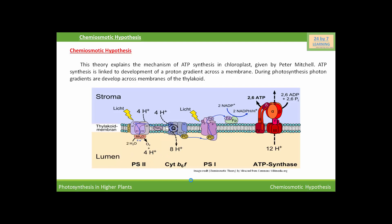Four hydrogen atoms are added into the lumen of the thylakoid by the splitting of two water molecules. Twelve hydrogen ions move from the stroma of the chloroplast to the lumen of the thylakoid per four electrons formed, and also per oxygen molecule formed. This is all about the chemiosmotic hypothesis. Thank you.